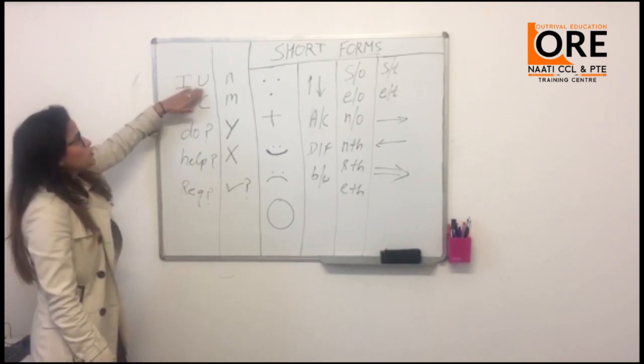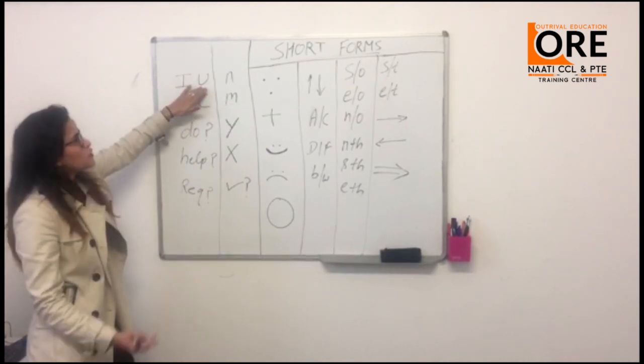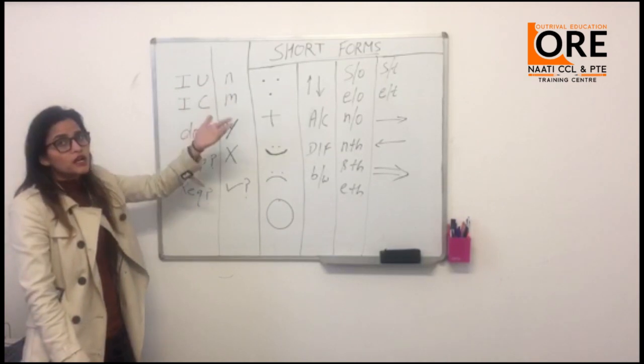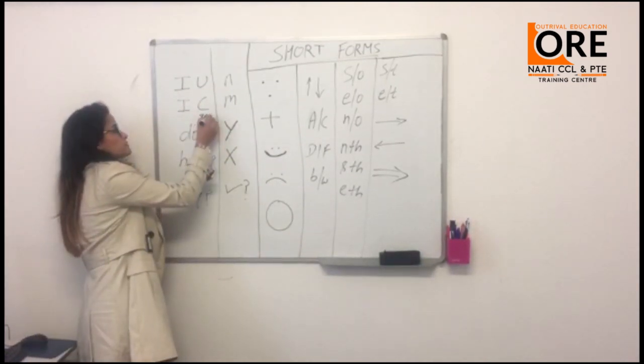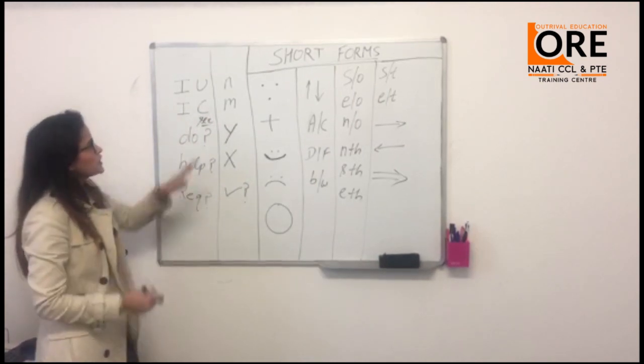For example, first of all I U means I understand. So I understand you can say in Hindi 'mein samjha' or 'mein samjhi'. I see, I see means S double E, same meaning - 'mein samjha' or 'mein samjhi' or 'mein dekhti hoon'.